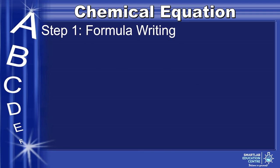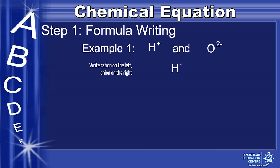To find out how to write the chemical formula, let's take a look at some examples. Example 1, hydrogen cation and oxide anion. First, we write the cation on the left, anion on the right. Next, we write the valency for each atom as a subscript.